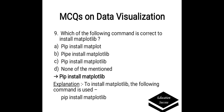Which of the following commands is correct to install Matplotlib? Options are: A. pip install Matplotlib, B. py install Matplotlib, C. pip install Matplotlib, D. None of the mentioned. Correct answer is pip install Matplotlib. To install Matplotlib, the following command is used: pip install Matplotlib.